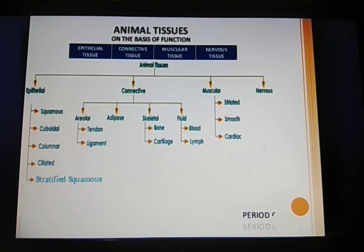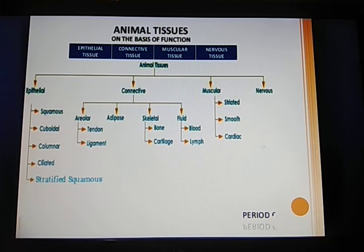Connective tissue has basically 4 categories: areolar tissue, adipose tissue, skeletal tissue, and fluid connective tissue. Areolar tissue is of 2 types: tendon and ligament. Skeletal tissue is also 2 types: bone and cartilage. Fluid tissue is of 2 types: blood and lymph.